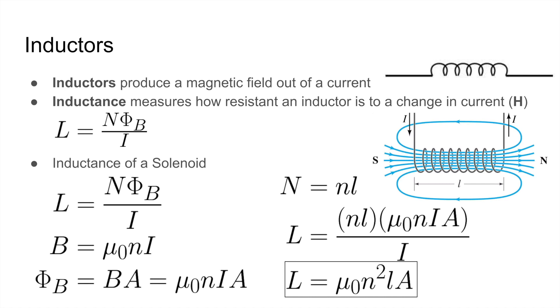So the inductance of a solenoid is given by L equals N times the magnetic flux over I. Now B, the magnetic field that a solenoid creates, remember, is μ0 NI, which means that the magnetic flux is BA, which is μ0 NIA. And N is equal to nL,